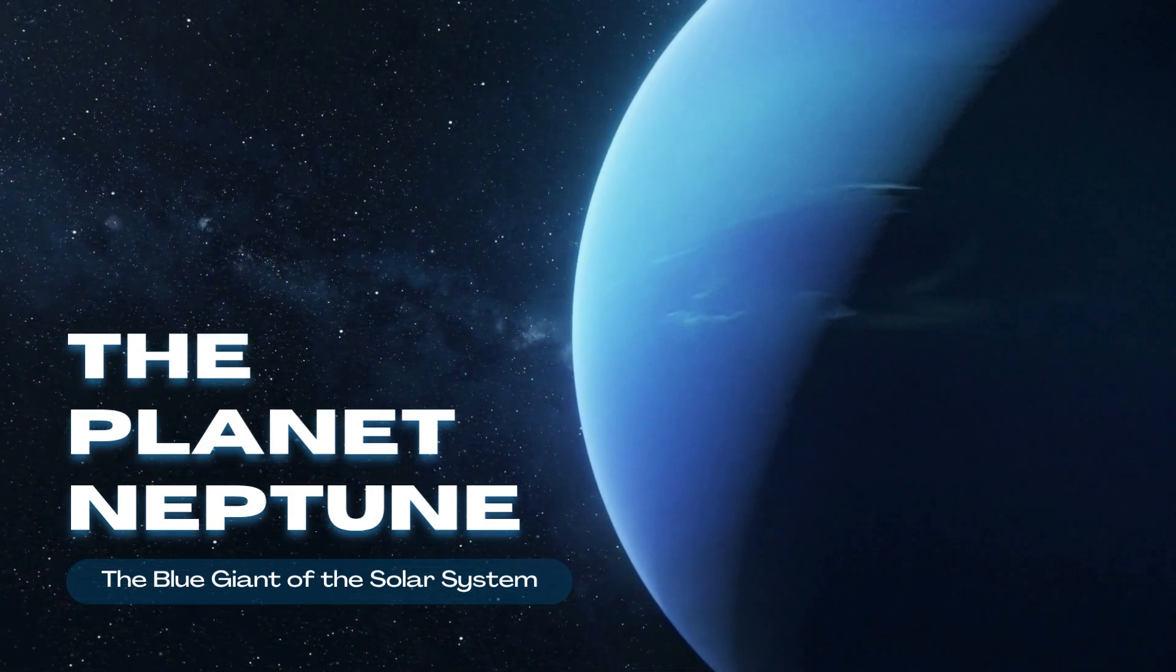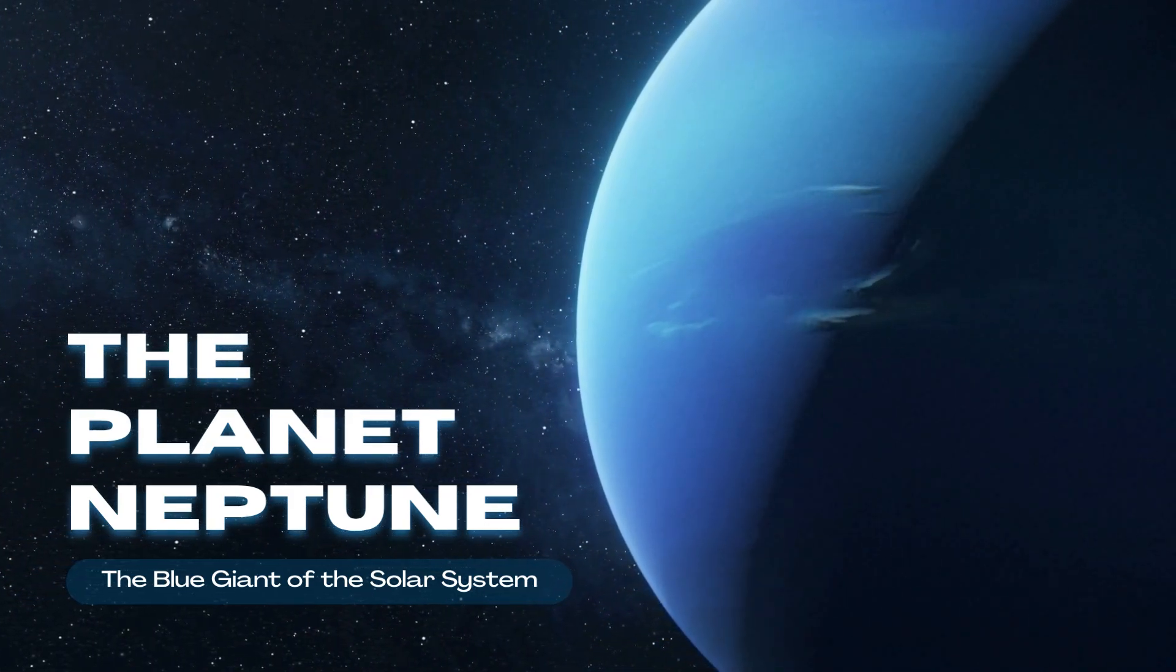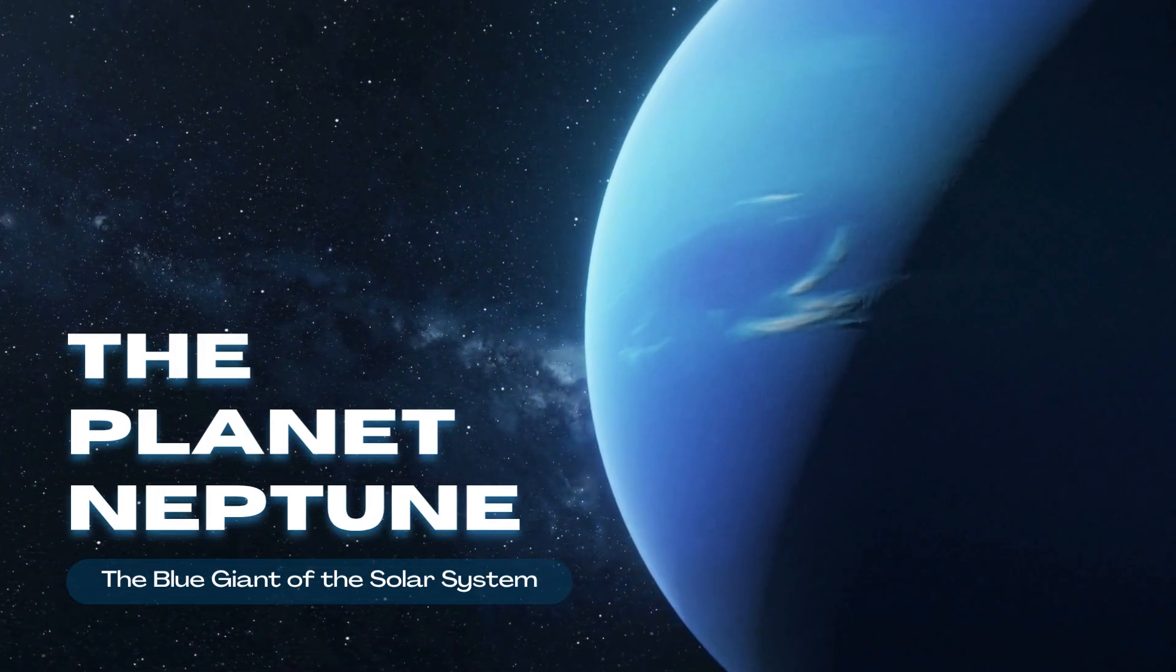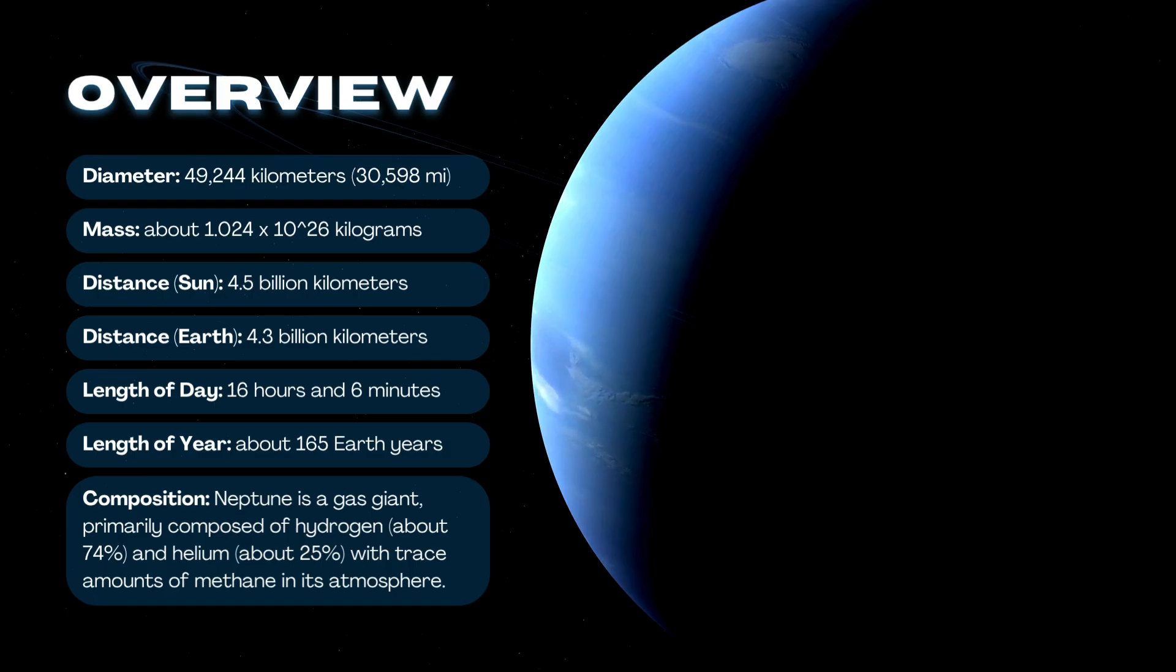The planet Neptune, the blue giant of the solar system. Composition: Neptune is a gas giant, primarily composed of hydrogen, about 74%, and helium, about 25%, with trace amounts of methane in its atmosphere.